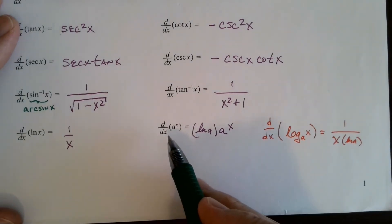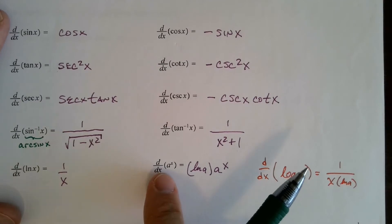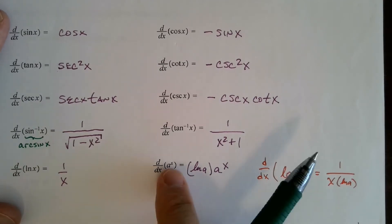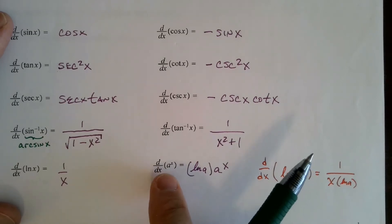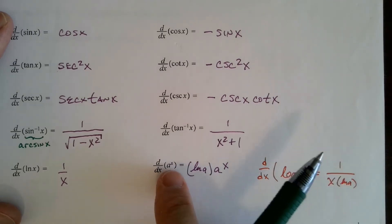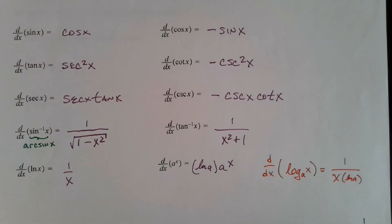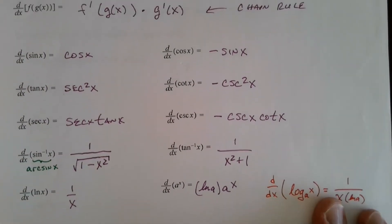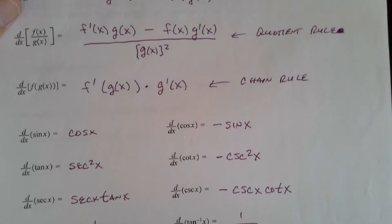We saw the exponential function e to the x; its derivative is e to the x. But in general, for something like 2 to the x or 3 to the x, we use the general exponential function rule: the derivative of a to the x is the natural log of a times a to the x. So the derivative of 2 to the x is the natural log of 2 times 2 to the x. These are all the rules you must know in order to proceed.